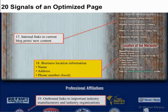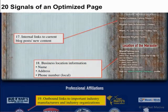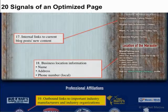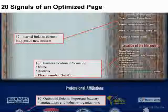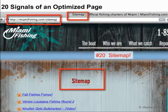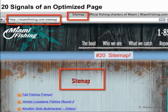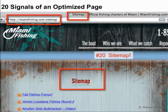We have our business name, address, and phone number — which should always be consistent and on every page of the website. We have outbound links to important industry organizations and manufacturers like the National Association of Charter Operators, the International Game Fish Association, or Penn Rod and Reels. These help affiliate us with good neighborhoods — people in the fishing industry that have authority — and associate our site with positive industry organizations. And finally, one of the most important signals in search engine optimization is the sitemap. It is right at /sitemap, it's extension-less, linked from every single page, and it says 'sitemap' in the title, the heading, and the URL. That's the 20th signal of a well-optimized page.